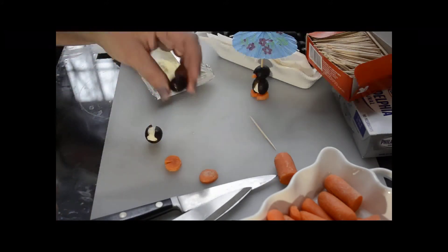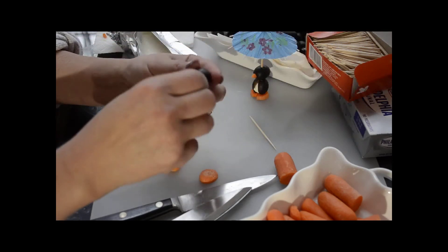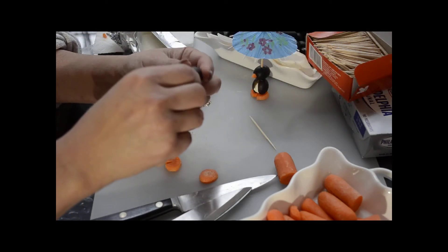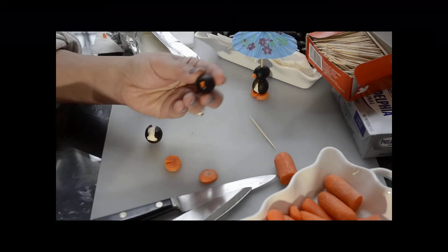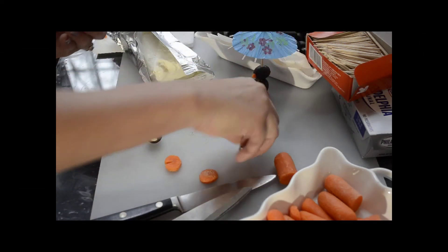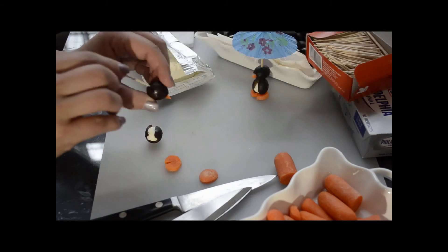Take your second olive and insert the carrot. If it goes too deep, just simply take your toothpick and you can gently push it out a little.